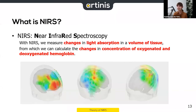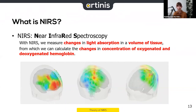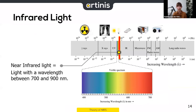So what is NIRS exactly? With NIRS we measure changes in light absorption in a volume of tissue, and from these changes in light absorption we can calculate the changes in concentration of oxygenated and deoxygenated hemoglobin. Let's talk about the near infrared light we're using.